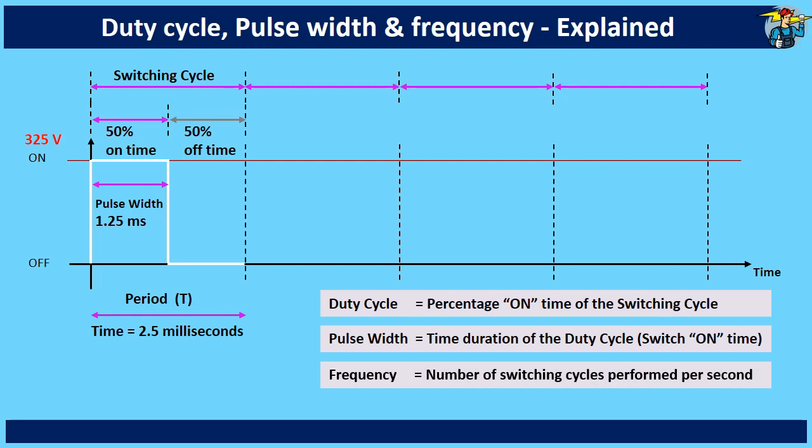Frequency is the number of switching cycles performed in 1 second. So divide 1 second by periodic time in seconds, you get the frequency of switching cycle.